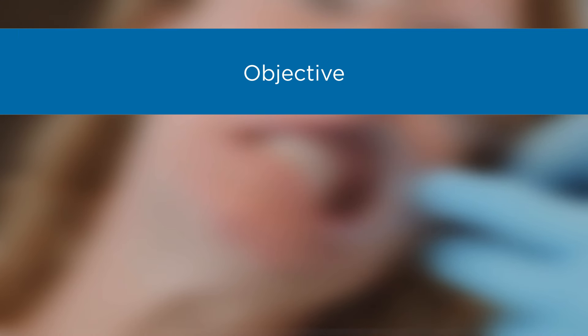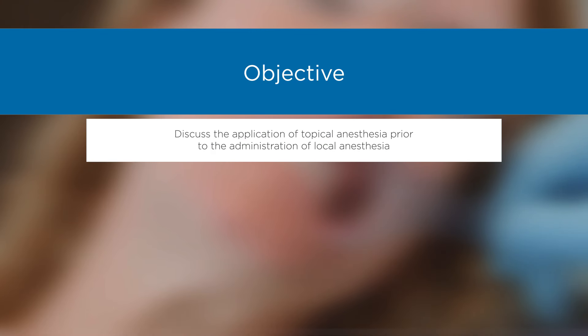Objective: Discuss the application of topical anesthesia prior to the administration of local anesthesia. There are many different types of topical anesthetics — sprays, gels, liquids, and ointments. For training purposes, 20% benzocaine is used because overdose risk is very low and it is poorly absorbed systemically. Certain topicals and injectables should be delivered with care, as a genetic condition called methemoglobinemia can cause issues for certain patients.